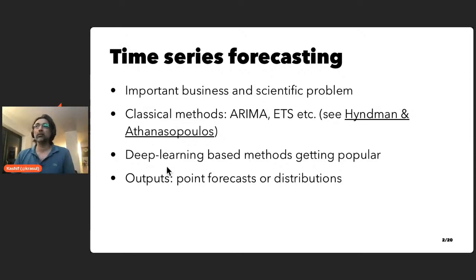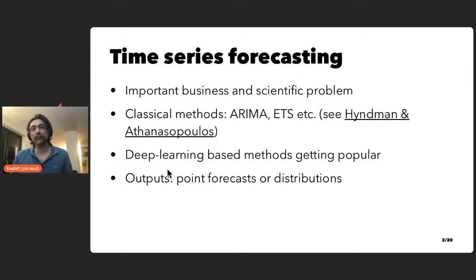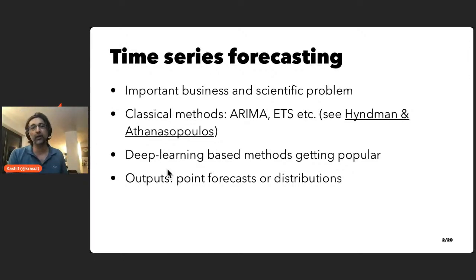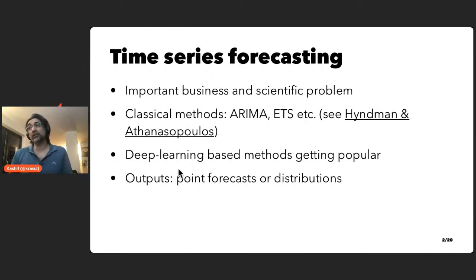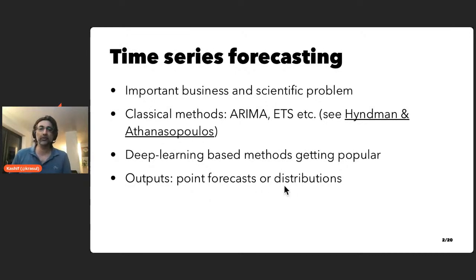Deep learning-based methods using recurrent neural networks like LSTMs are starting to become popular due to their end-to-end training of a single global shared model. They provide all the hallmarks of deep learning — from automatic feature engineering to adding exogenous covariates. The output of these forecasts can either be point forecasts — single point values — or they can be probability distributions.